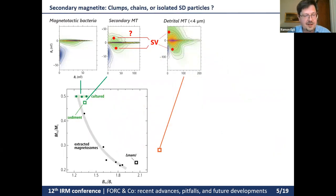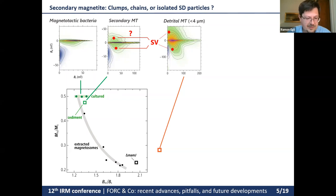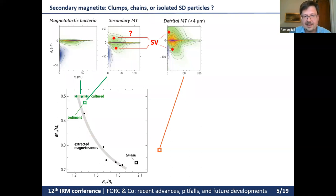Beginning with magnetofossils: we don't know exactly what their structure is in the sediment, because when we do a magnetic extraction and look at them under the electron microscope, we have destroyed their original arrangement. We don't know exactly how these particles are dispersed in the sediment. One early theory was that as soon as the bacterial cells dissolve, the chains — which are unstable — collapse and create clusters of single-domain magnetite particles with dipolar interactions.